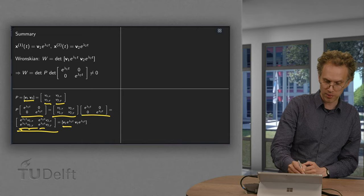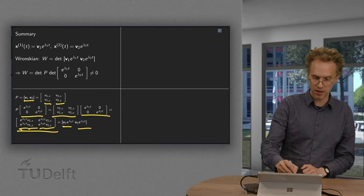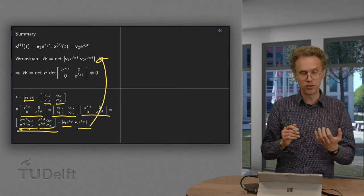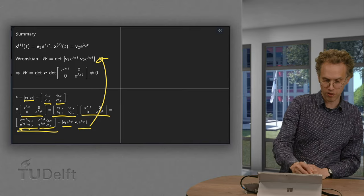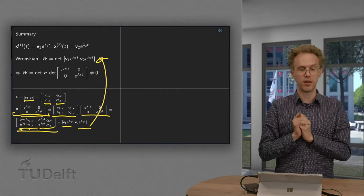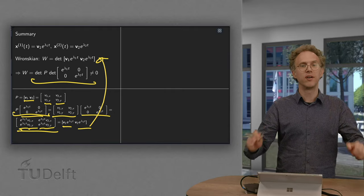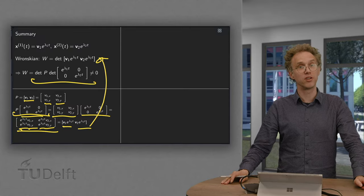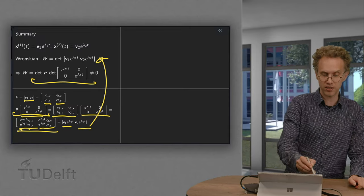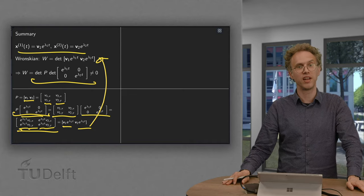And e to the power lambda 2t times v2 as second column. So this is exactly the same as your Wronskian matrix. So the determinant of your Wronskian matrix, your Wronskian, equals the determinant of p times this e to the power d matrix. So this determinant is non-zero. So this means that your solutions are independent, and that means that your general solution will be a linear combination of x1 and x2.